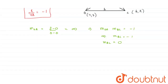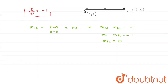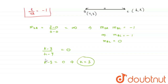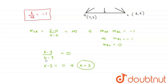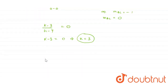Now, slope of BC: point B is (4,3) and C is (H, K), so slope of BC = (K − 3)/(H − 4) = 0. Solving this we get K − 3 = 0, so K = 3. That means the K coordinate is positive. From the equation K/(4H) = −1, we can calculate H.